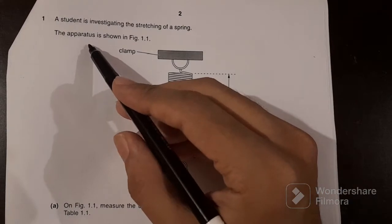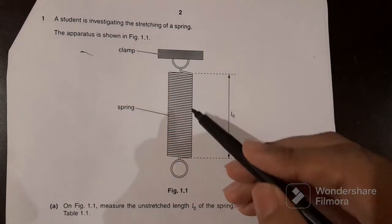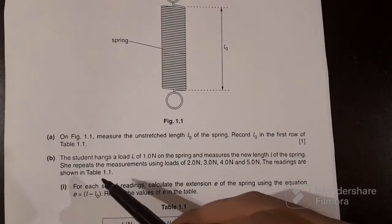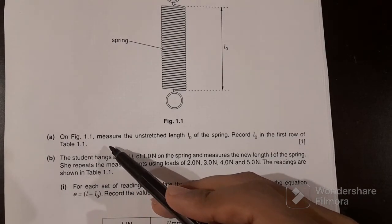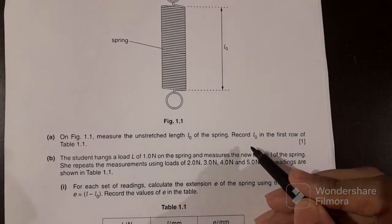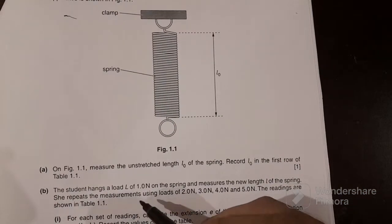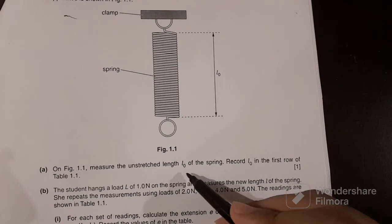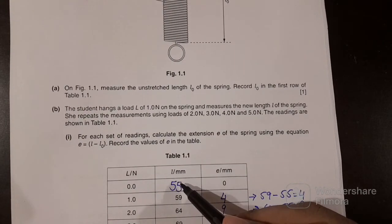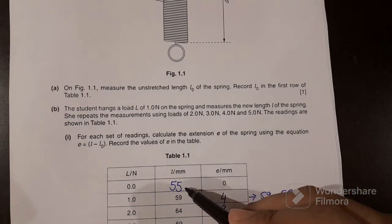Question 1 states a student is investigating the stretching of a spring. The apparatus is shown in figure 4.1 — a diagram of the spring attached with a clamp. Part A states: on figure 1.1, measure the unstretched length L0 of the spring and record it in the first row of table 1.1. We will write L0 as 55 mm.